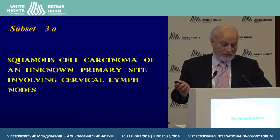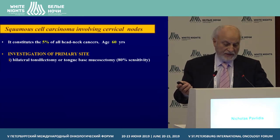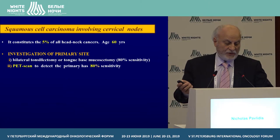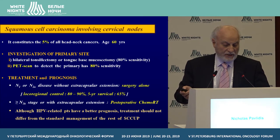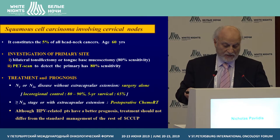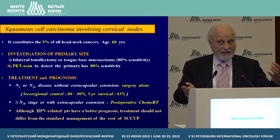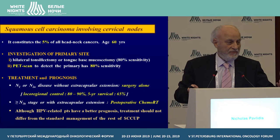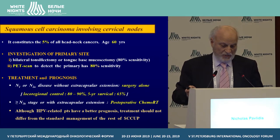Now let's move to squamous cell carcinoma of the unknown primary — this looks like patients with advanced head and neck cancer. For the investigational approach, a bilateral tonsillectomy or PET scan is quite helpful. If you have N1 or N2 disease without extracapsular extension, surgery alone gives good results. If it is more than N2B stage or with extracapsular extension, you go for postoperative chemoradiation. Patients with HPV positivity do better, but you don't have to treat them differently from regular squamous cell carcinoma patients.